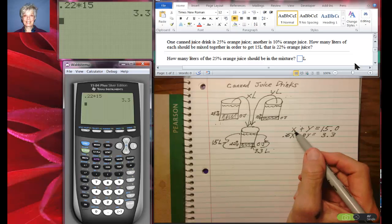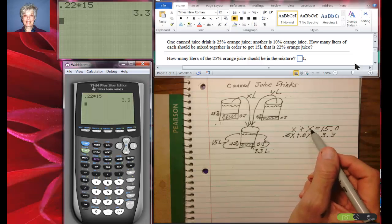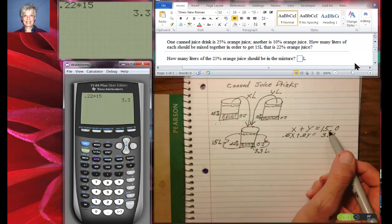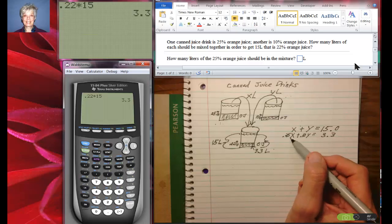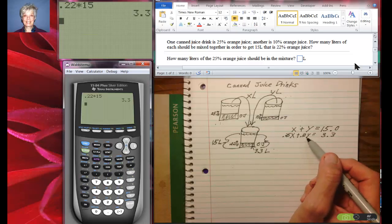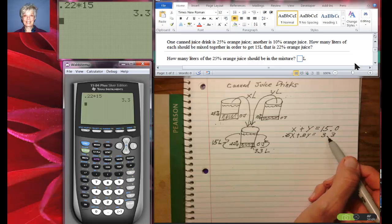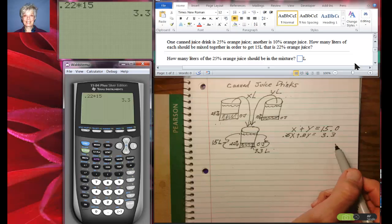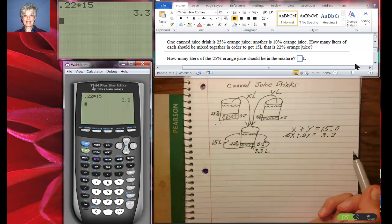That the liters of the 25% orange juice plus the liters of the 10% orange juice equals the total liters at the end. And the liters of pure orange juice plus the liters of pure orange juice equals the liters of pure orange juice. And all of these problems work basically the same way, actually exactly the same way. So now all we have to do is do this problem.